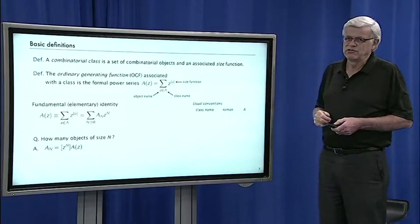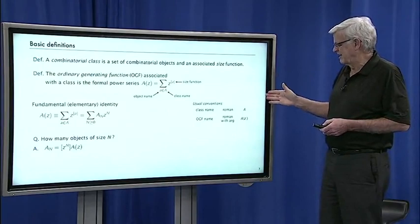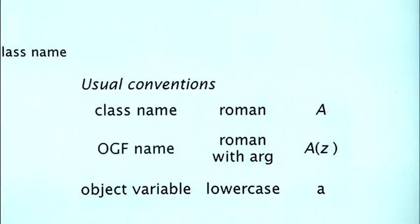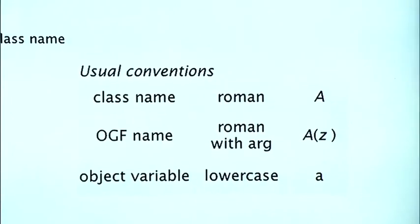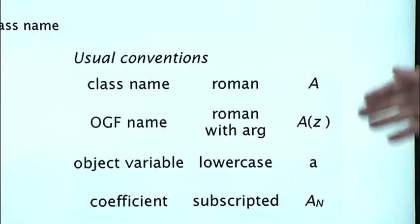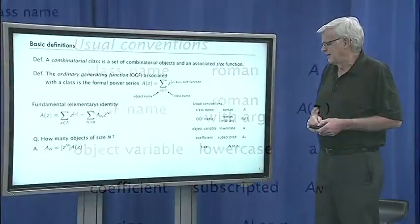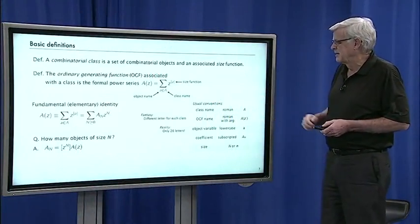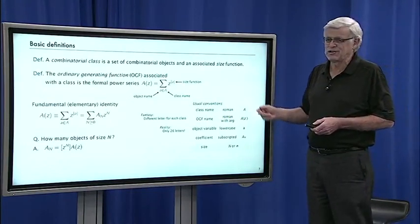I mentioned the conventions. Usually, we try to use a Roman letter for the class name. For the generating function name, it's the same letter with an argument. In the book, we use a slightly different font. Object variable is just lowercase of the same letter. The coefficient is subscripted of the same letter. For size, usually we use capital N or little n.